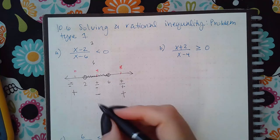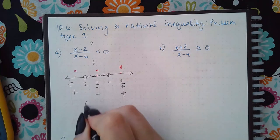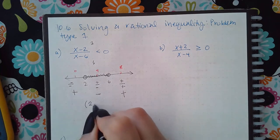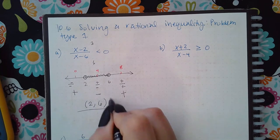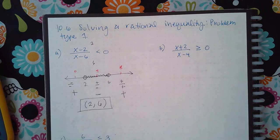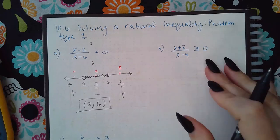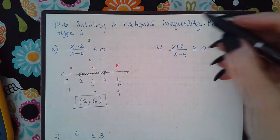So the answer for that interval is parenthesis two, six parenthesis — both open because two had no bar and six came from the denominator.